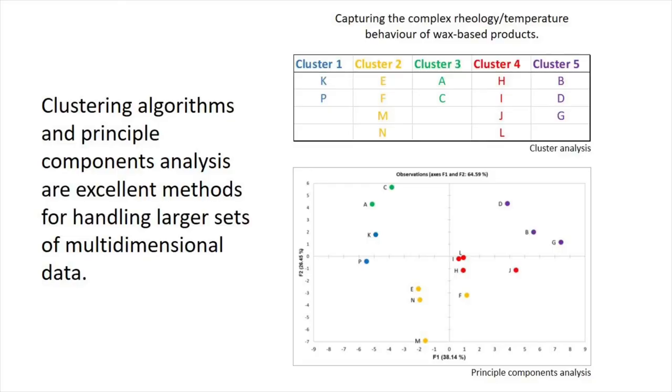Looking at these three metrics — yield stress, viscosity and coefficient of friction — is a great start, and you have to start somewhere. But it's important not to underestimate how complex it is to predict sensory properties. Typically what we would do from here is gather some further metrics and combine them using statistical tools and multidimensional analysis techniques to visualize and build up models of this sensory landscape.